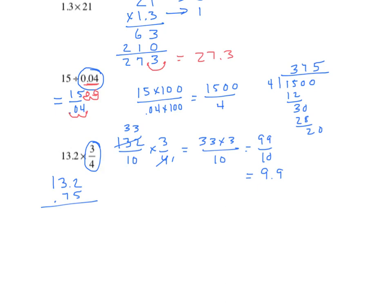Let's treat this as a decimal. Five times two is ten, regroup one. Five times three is fifteen, plus one is sixteen, regroup one. Five times one is five, plus one is six. Put our zero in. Seven times two is fourteen, regroup one. Seven times three is twenty-one, plus one is twenty-two, regroup two. Seven times one is seven, plus two is nine. Taking the sum of our partial products, we count our decimal places: one here, two here, for a total of three. Moving the decimal three places, we end up with nine and nine-tenths.